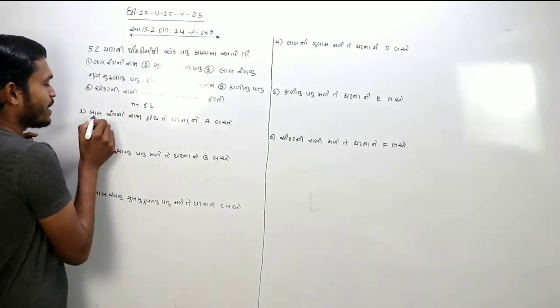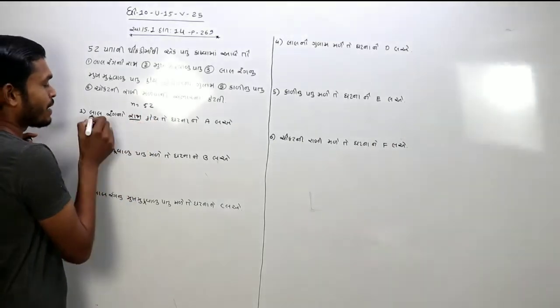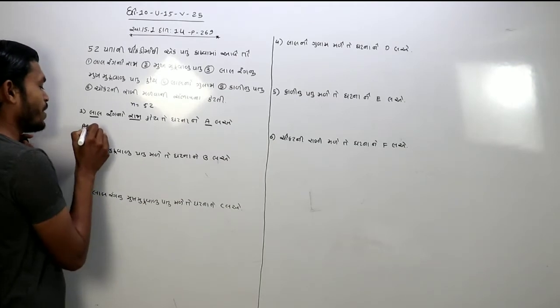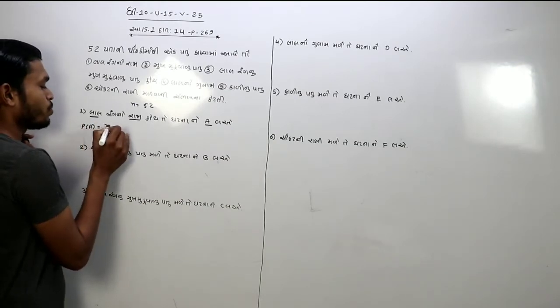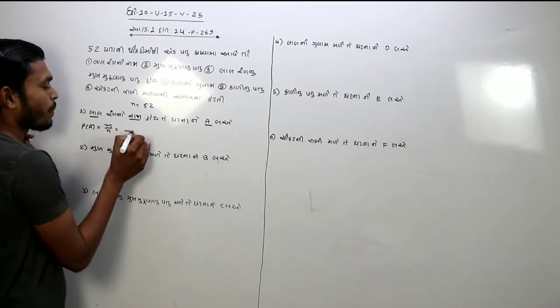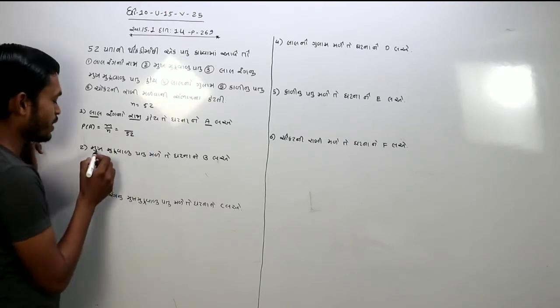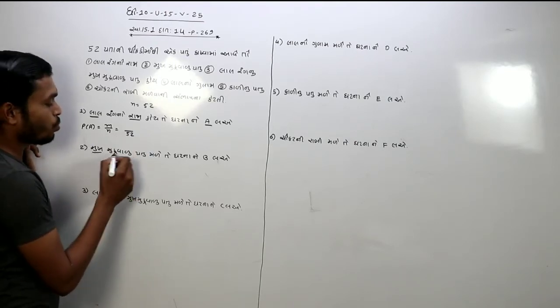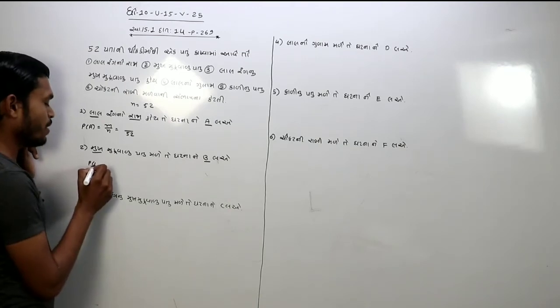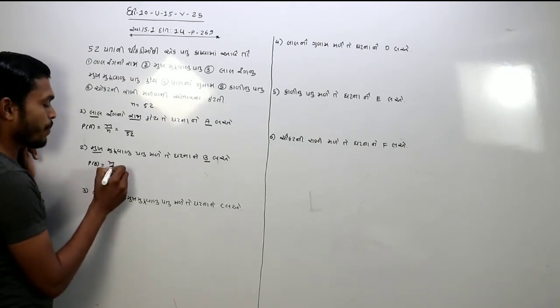તેયાર બાદ હેયાં લાલ રંગનો રાજા હઓય લાલ રંગનો રાજા હઓય એ ગટ્ણને આપણે A દારી છે તો આયાં ભાગ્ય એન આને કૂલ આપણા 22